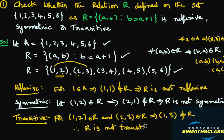Finally, the conclusion: this given relation R on the given set is neither reflexive, nor symmetric, nor transitive. In the next class, if you practice another 3 or 4 problems on this relations topic, you will get more clarity on how to check whether a relation is reflexive, symmetric, or transitive. I hope you understood this class. If you like this video, please press the like button and share it with your friends, and don't forget to subscribe to my channel for more updates. Thank you.